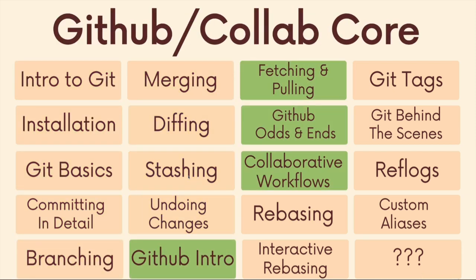Then we move on to GitHub and collaboration. I've grouped together four sections here. We learn about the basics of GitHub — getting our code up on GitHub, getting stuff down from GitHub. We talk about things like GitHub Pages and GitHub Gists, and collaboration workflows. That's a very significant chunk of this course. We spend a lot of time talking about the different ways you could use Git with a team to collaborate, different structures and strategies you can employ — there's not just one way, and they all have certain strengths and weaknesses.